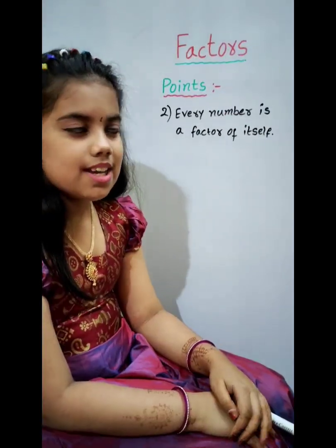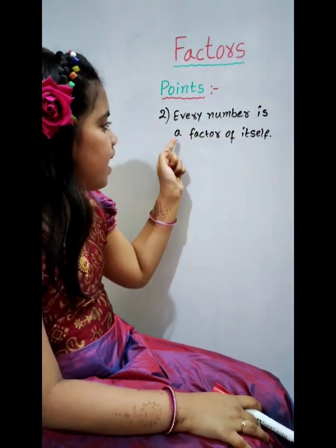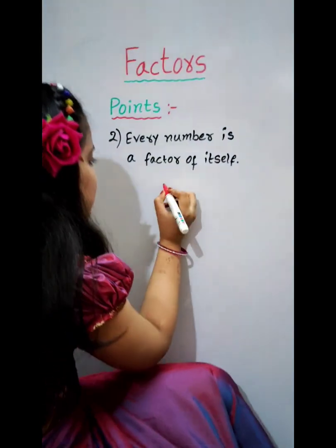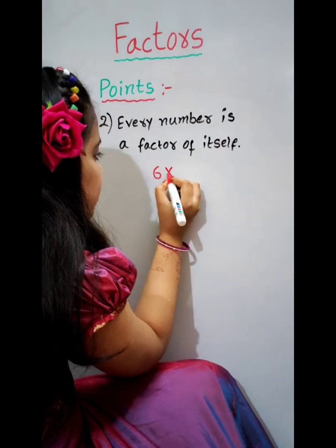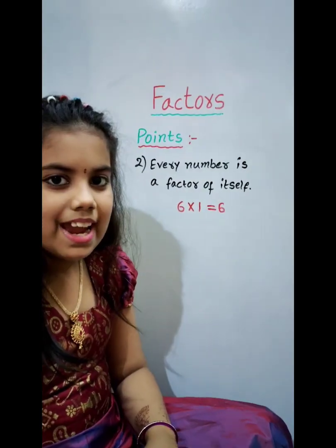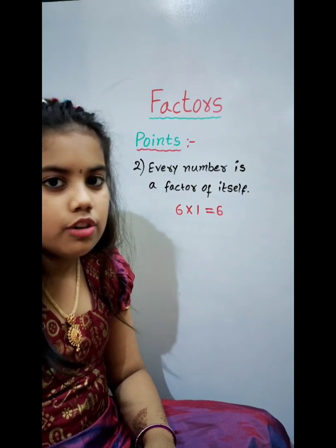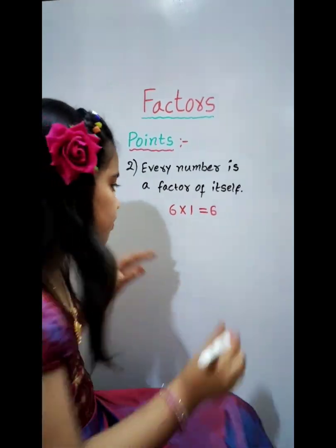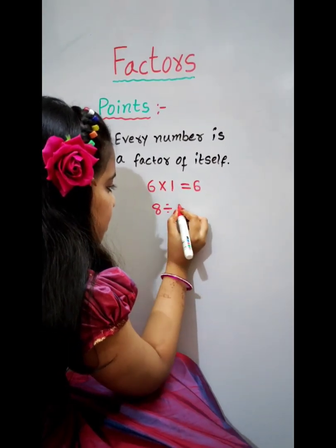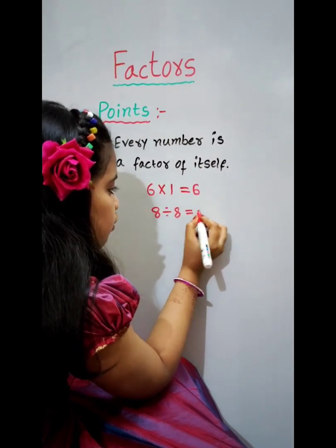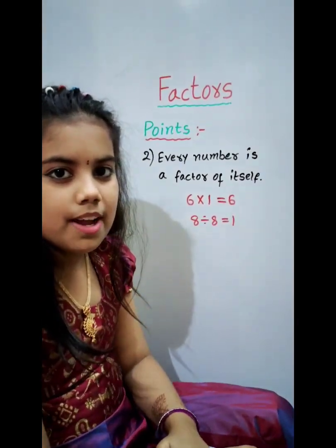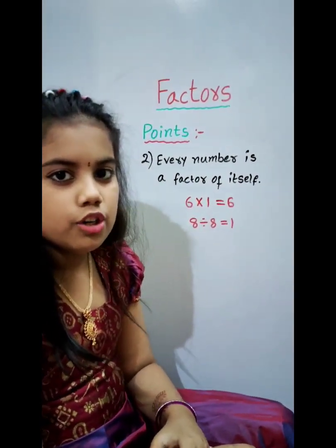A number divided by 1 equals the number itself. The second one is: every number is a factor of itself. For example, 6 times 1 equals 6. Any number times 1 equals the number itself. 8 divided by 8 equals 1.